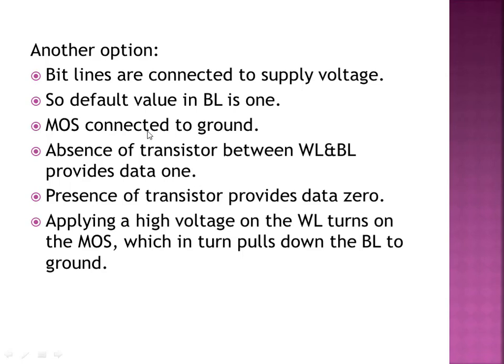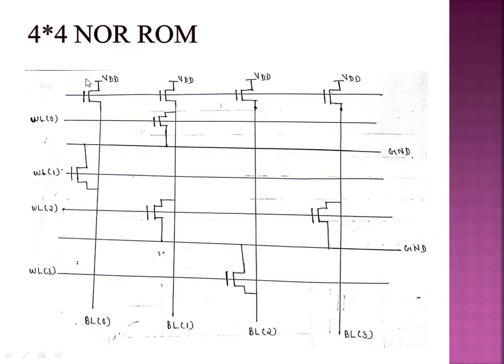The next configuration is NOR ROM, which is the reverse arrangement. In NOR ROM, the bitline is connected to the supply voltage VDD instead of ground. The NMOS transistor is connected to ground. So by default, the bitline value is high (1). When a transistor is present and the wordline enables it, the bitline is pulled to ground, giving a 0. The absence of a transistor gives a 1.